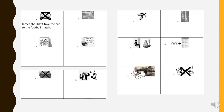Number seven shows somebody running — schnell laufen. Can we run on the bus? Number eight shows the bus handrail — this is what we hold on the bus so we don't fall — das halten wir fest im Bus, sodass wir nicht hinfallen. Number nine shows a picture of somebody standing up — er steht auf — so the old lady can sit down — sodass die alte Frau da sitzen kann.